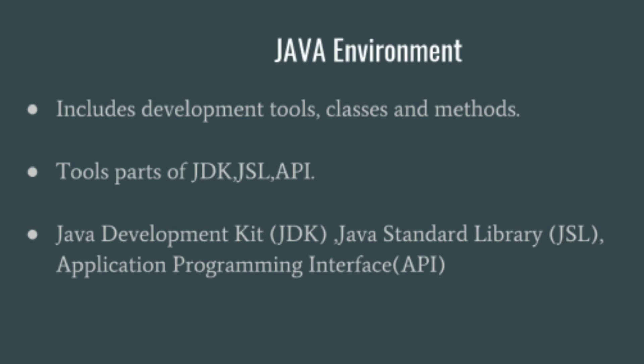In the Java environment, we are using many tools, classes and methods, and also JDK, JSL, and API. JDK means Java Development Kit, JSL means Java Standard Library, and API means Application Programming Interface.